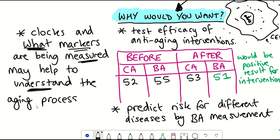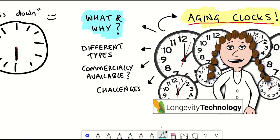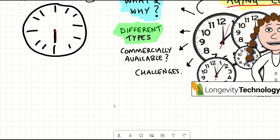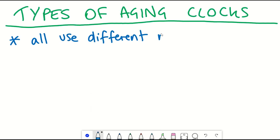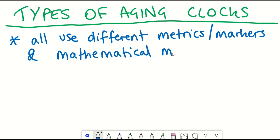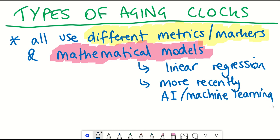So this now nicely brings us on to the different types of clocks that have been published. So a common feature across these different clocks is that they use different metrics so different biomarkers and mathematical models. Typically linear regression models are used but within the last few years more frequently artificial intelligence has been used to gather this information and predict a value for biological age.